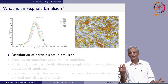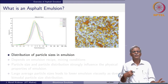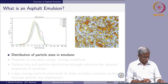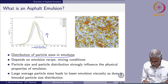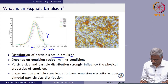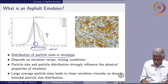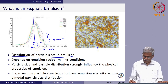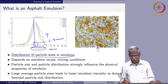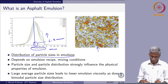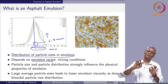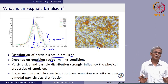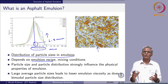Now comes the most important thing: particle size distribution. The particle size distribution of emulsion is shown in a picture where the x-axis is in microns, roughly 6 to 8 microns, with the y-axis showing the percentage distribution. This depends on the emulsion recipe and mixing conditions. The particle size and distribution strongly influence the physical properties — how the emulsion flows, how it breaks, and how it functions.